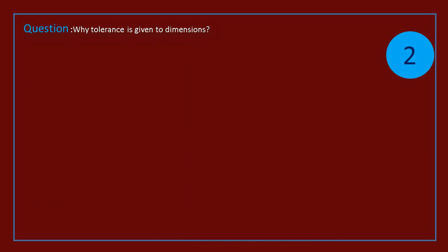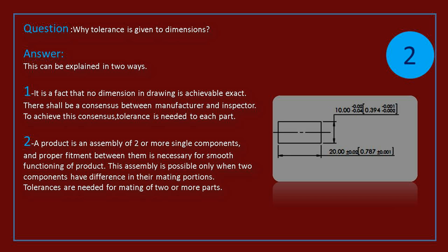Question: why tolerance is given to dimensions? It is a fact that no dimension in drawing is achievable exact. There shall be a consensus between manufacturer and inspector. To achieve this consensus, tolerance is needed to each part.